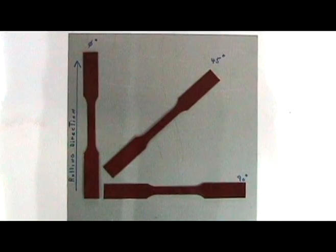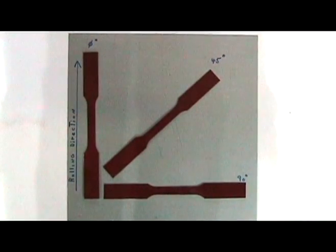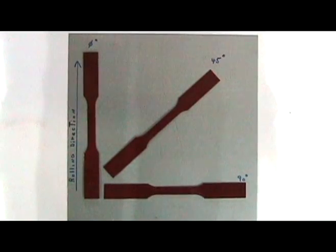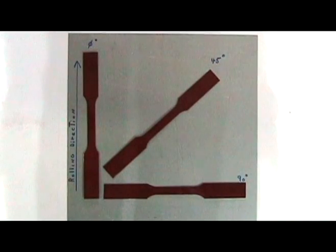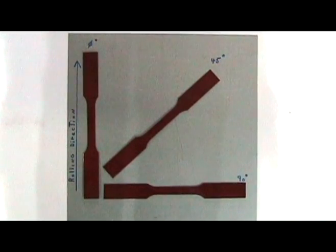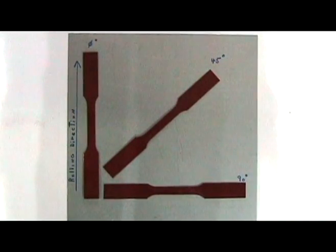Sheet steel can exhibit different behavior depending on the direction of the tensile test with respect to the manufacturing or rolling direction. Some standards, therefore, require the measurement of tensile properties in the 0, 45, and 90 degrees with respect to the rolling direction.